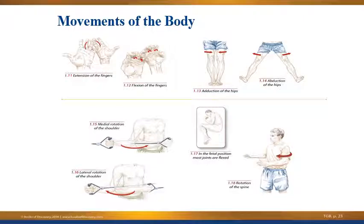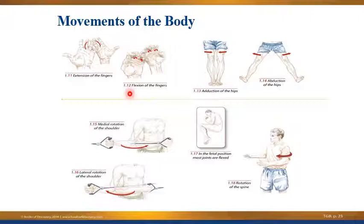Now we'll look at some general movements of the body. Starting with flexion and extension: flexion is any time you bend a joint or bring bones closer together, and extension is when you open up or straighten a joint. Here you're seeing an example of flexion at the fingers. Flexion occurs in the sagittal plane — so if you flex your elbow, extend your elbow, flex your knee, or extend your knee, all of that occurs in the sagittal plane.